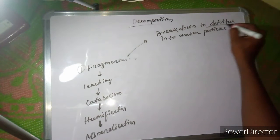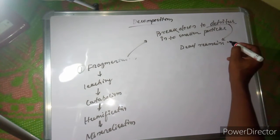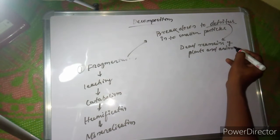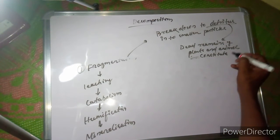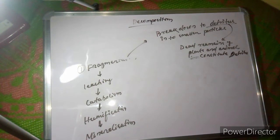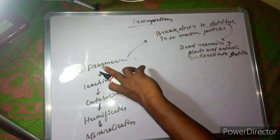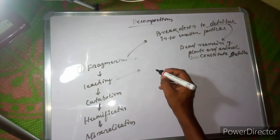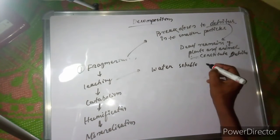Dead remains of plants and animals constitute detritus. The detritus particles break down into water-soluble smaller particles.